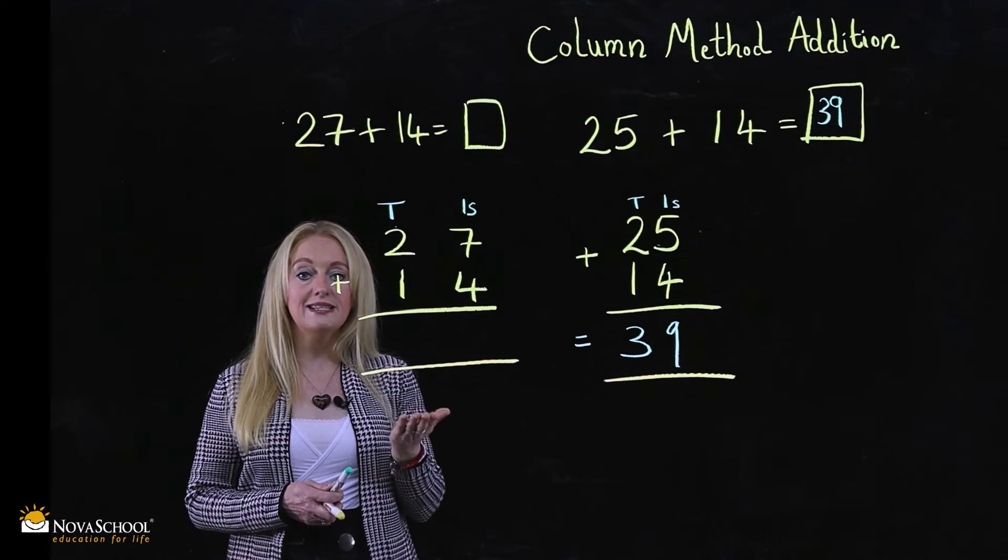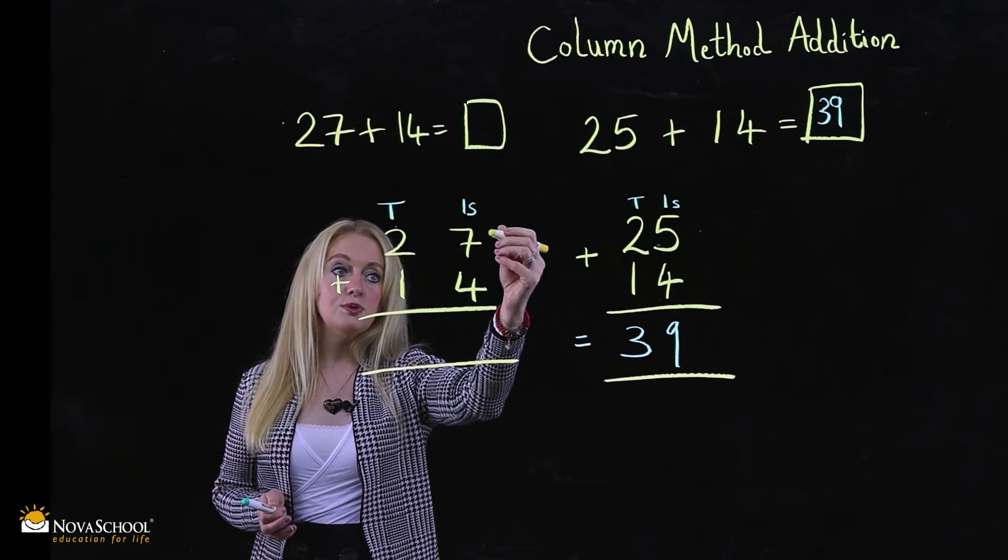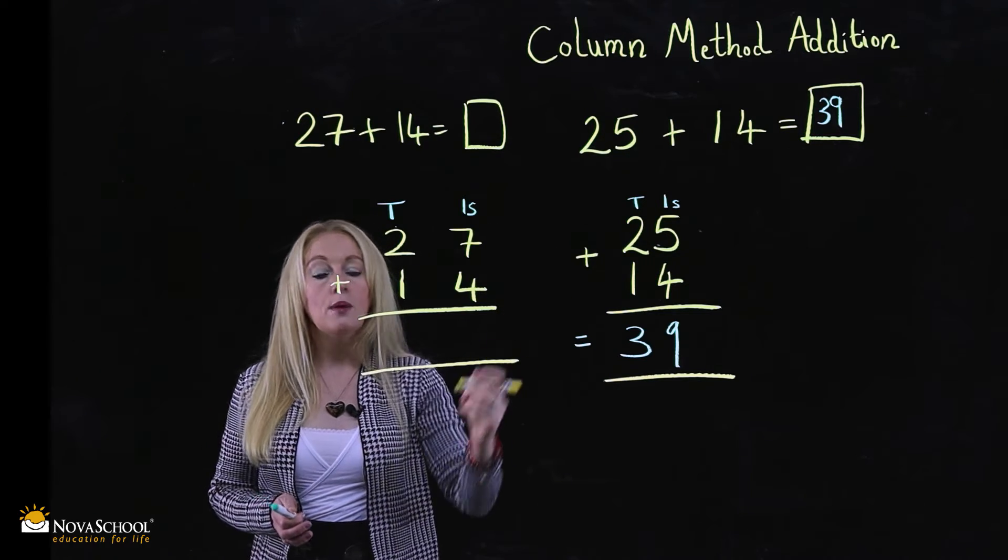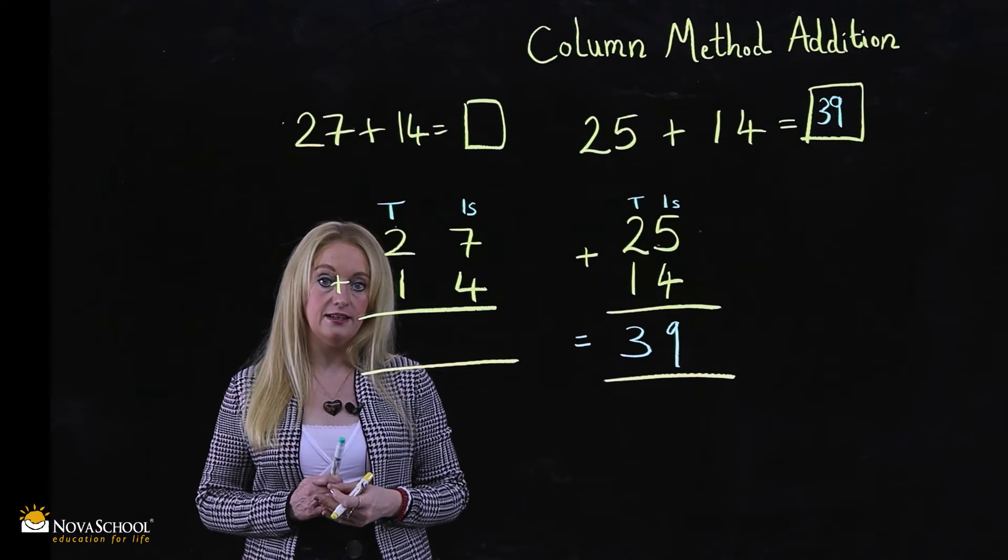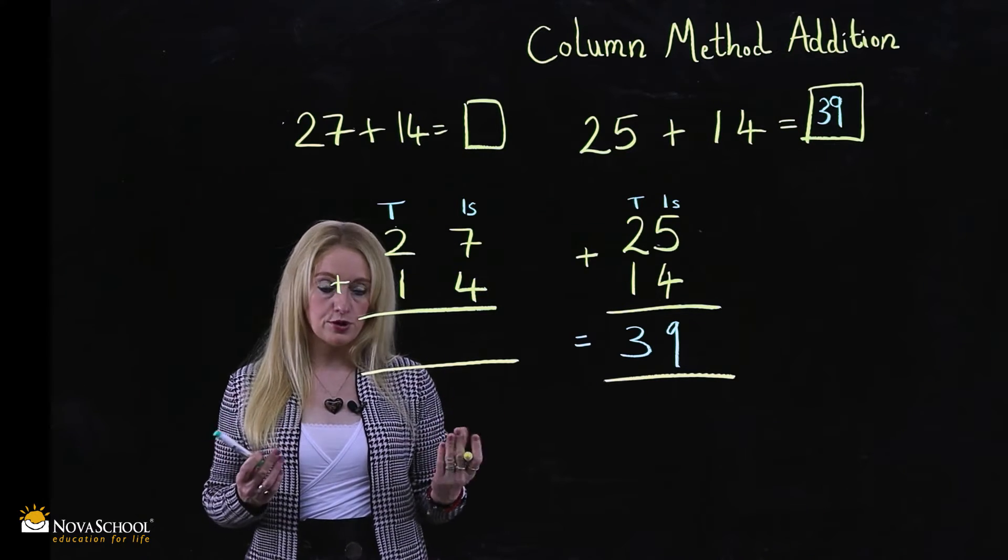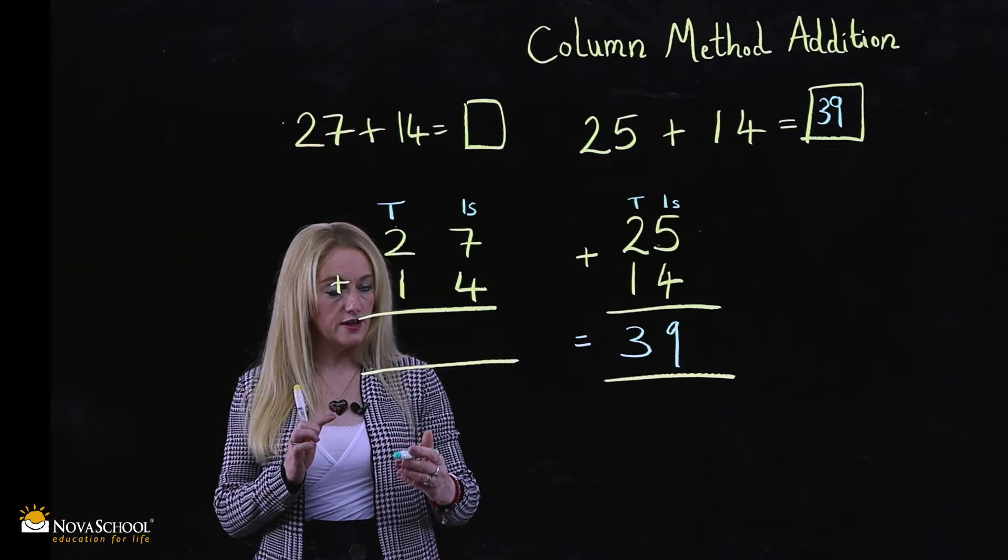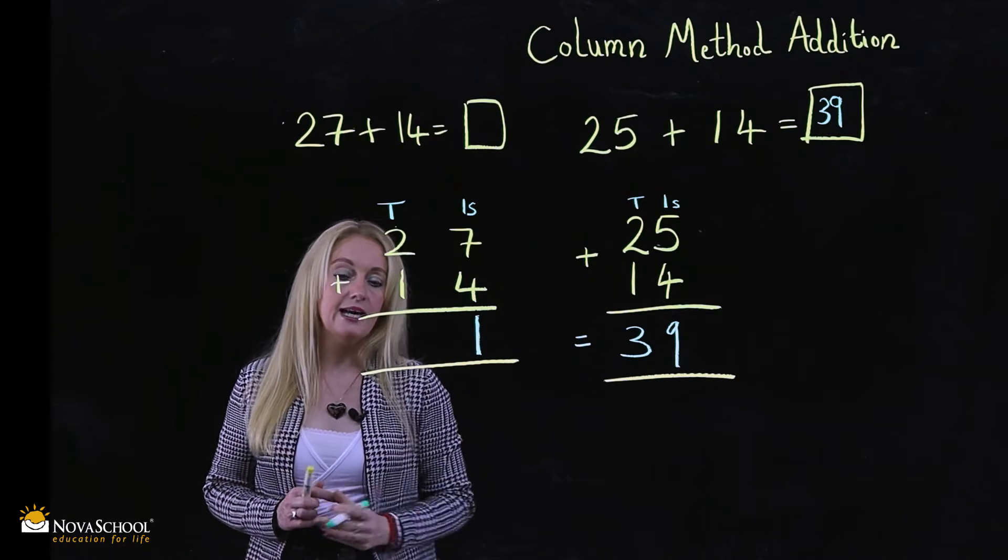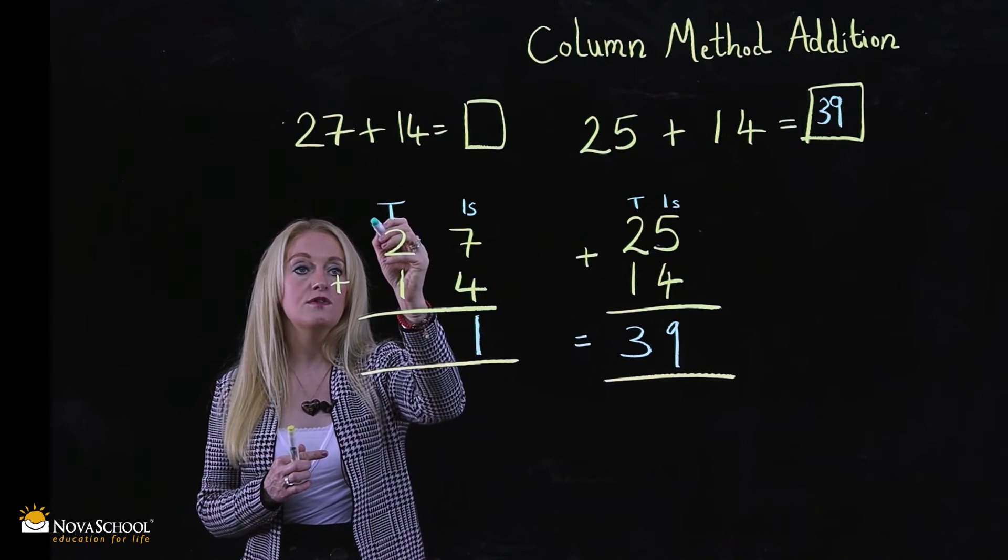We start always in the ones column. So now this is what we do. We do seven add four. Now we know we are crossing over, we're bridging, we're crossing over the 10. We have 11 now. So what do we do? We put the one from the 11, the one one that we have, we pop it here. And the 10 that makes the 11, we pop it over here.